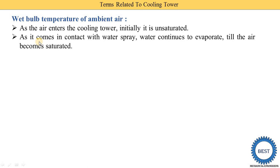In a cooling tower, we cool the water by using the air. The air comes in contact with the water, absorbs heat energy from the water, and during that time the water continuously evaporates. These evaporated water particles mix with the air, and the entire air, which was unsaturated, is converted into saturated air. Saturated air means it contains air plus water vapor particles.